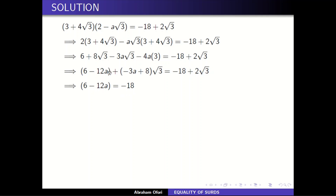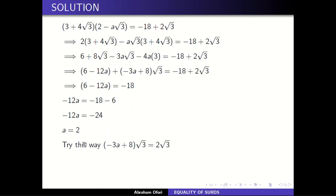From our definition, if two surds are equal, the rational side equals the rational side and the surd coefficient equals the surd coefficient. So we solve for a. The rational parts give us one equation, and the surd coefficients give another. Taking the rational equation: six minus twelve a equals negative eight. So negative eight minus six gives negative fourteen — dividing by negative twelve gives a equals two. Alternatively, the surd coefficients give negative three a plus eight equals eight, so a equals two.